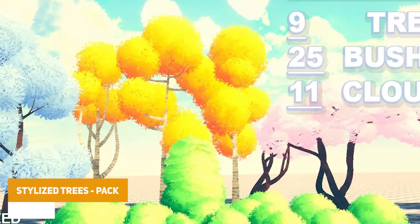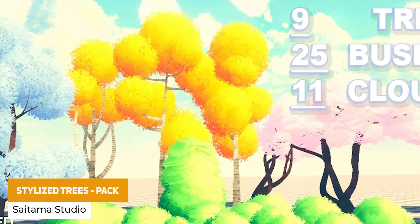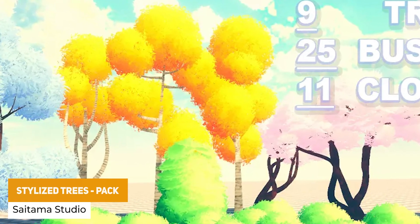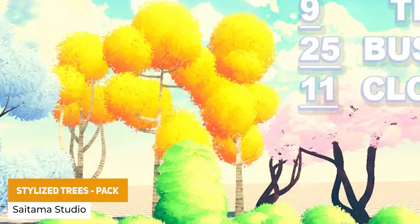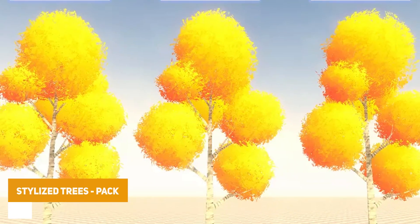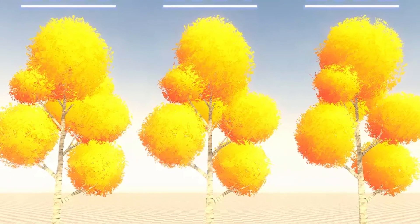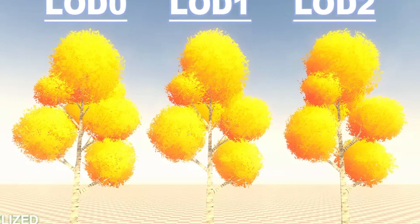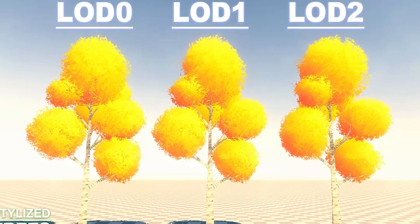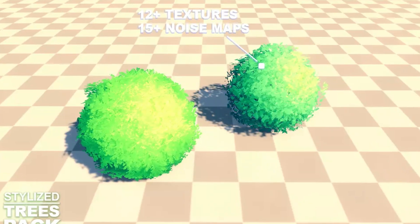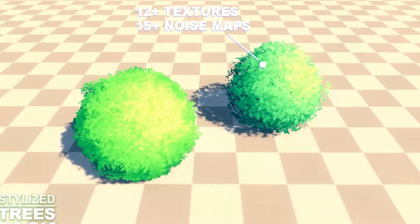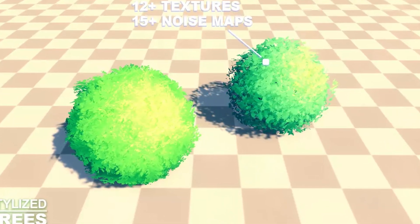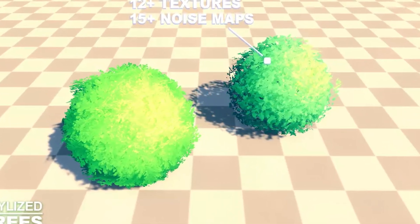We've got the Stylized Trees Pack, which is a selection of trees and bushes. You can choose any color to gradient this, with 40 different vegetation prefabs across trees, bushes and clouds, with bunches of LODs, different texture maps, noise maps and lots of different effects.